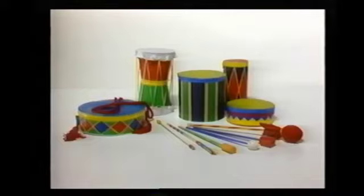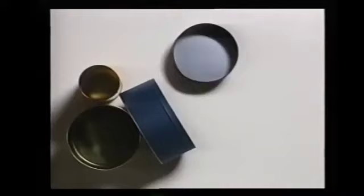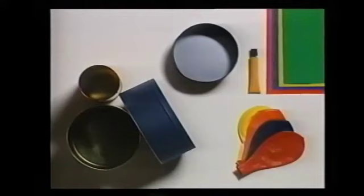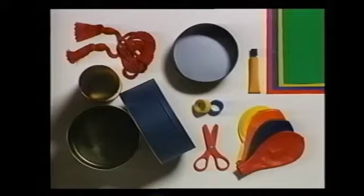First, some side drums. Here are the things you will need. Different shaped cookie tins, some giant balloons, colored paper, a tube of glue, colored adhesive tape, a pair of scissors, and some drapery cord.